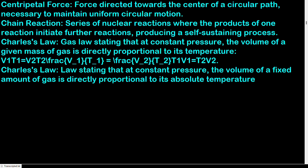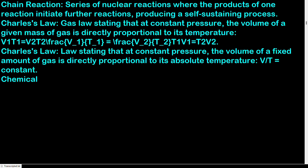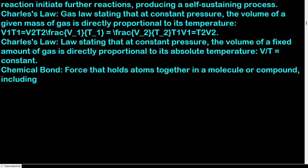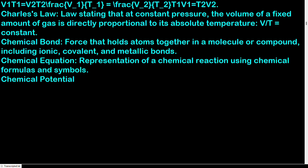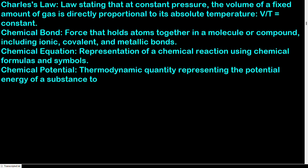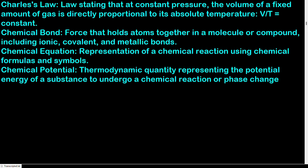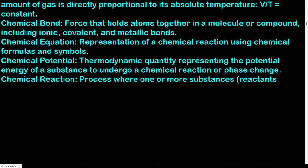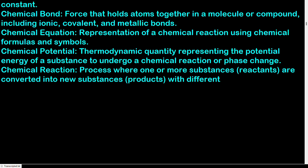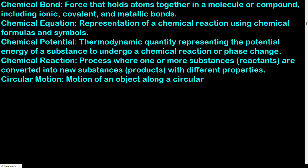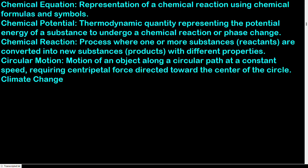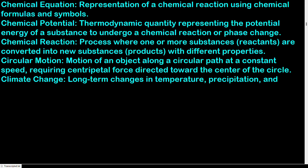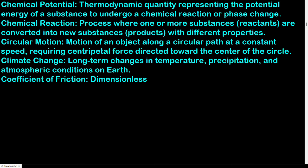Chemical bond: force that holds atoms together in a molecule or compound, including ionic, covalent, and metallic bonds. Chemical equation: representation of a chemical reaction using chemical formulas and symbols. Chemical potential: thermodynamic quantity representing the potential energy of a substance to undergo a chemical reaction or phase change. Chemical reaction: process where reactants are converted into new products with different properties. Circular motion: motion of an object along a circular path at constant speed, requiring centripetal force directed toward the center.